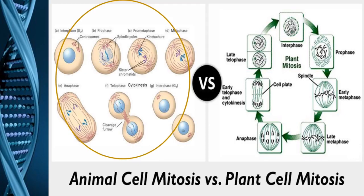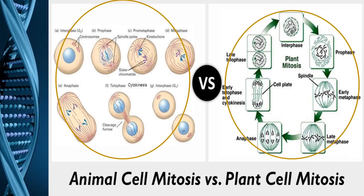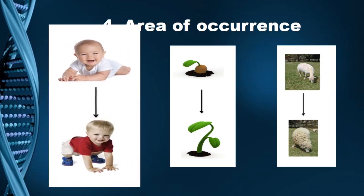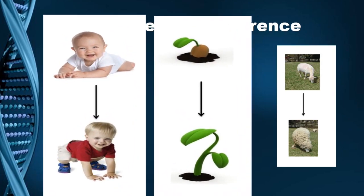As you can see, in an animal cell there is elongation of the cell by the elongation of its cytoplasm, a furrow forms, and ultimately the cell gets divided into two parts. Whereas in a plant cell, there is no such elongation, furrowing, or change of shape. So this is another difference — in an animal cell there is a change in its shape, and in a plant cell there is no such visible change.